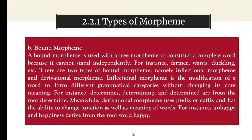A bound morpheme is used with a free morpheme to construct a complete word, because it cannot stand independently, for instance: -ful, -ness, -ling, etc. There are two types of bound morpheme, namely inflectional morpheme and derivational morpheme. Inflectional morpheme is the modification of a word to form different grammatical categories without changing its core meaning, for instance: determines, determining, and determined are from the root 'determine'. Meanwhile, the derivational morpheme uses prefix or suffix and has the ability to change the function as well as meaning of words, for instance: unhappy and happiness, derived from the root word happy.